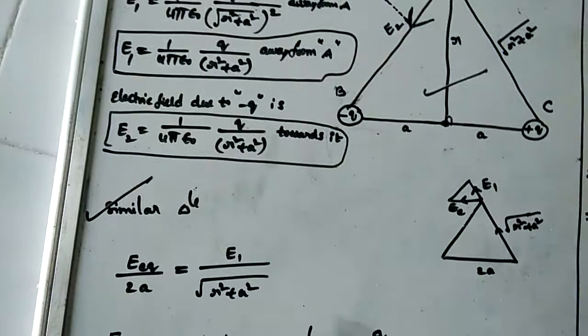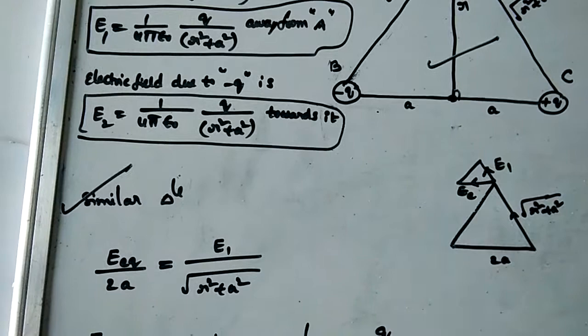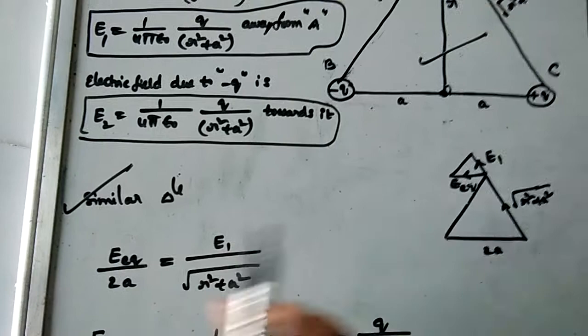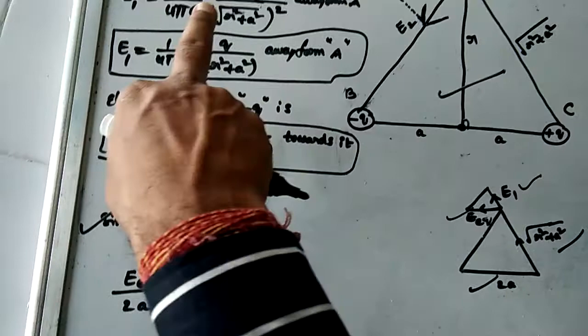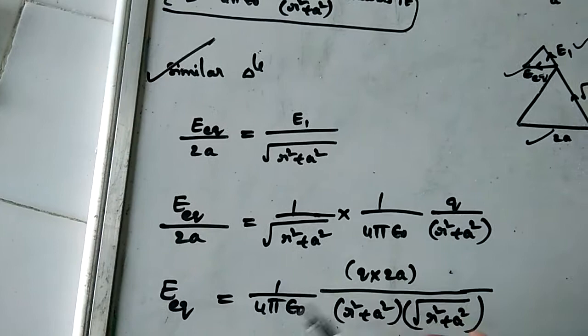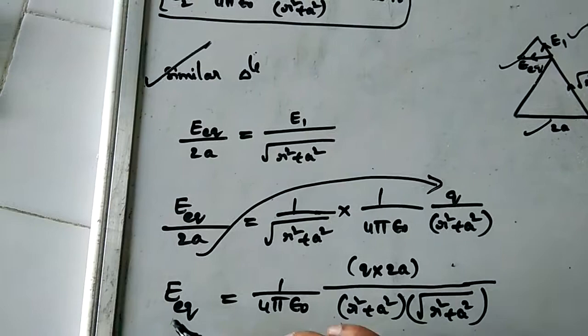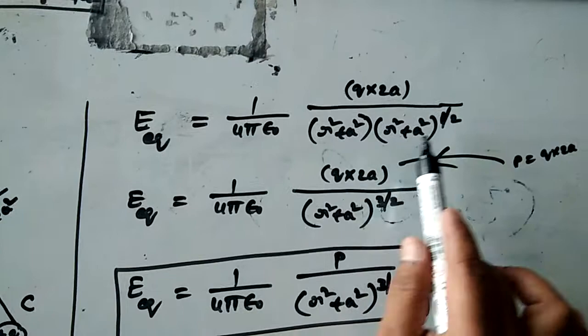For similar triangles, the ratio of parallel sides is the same. So E equatorial divided by 2a equals E1 divided by root of r squared plus a squared. Substituting the value of E1 — which is 1 by 4pi epsilon naught times q by (r squared plus a squared) — and doing cross multiplication, E equatorial equals 1 by 4pi epsilon naught times q into 2a, divided by the appropriate power of (r squared plus a squared).